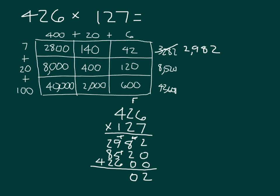2, 0, regroup 1. 10, 15, 16, write 6, regroup 1. 3, 11, 13, write 3, regroup 1. And 1 plus 4 is 5. So that's 53,602.